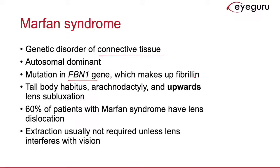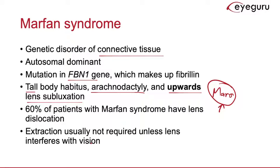Patients with Marfan syndrome are generally very tall and have long, slender toes and fingers — a condition known as arachnodactyly — and an upward lens dislocation. I usually remember this because when I think of Marfan syndrome, I think of Mars, and we need to look up to see Mars. In mild cases, surgical extraction of the lens is generally not needed unless the dislocation interferes with vision.